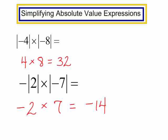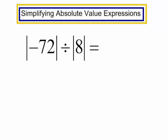Let's try one more problem. The absolute value of negative 72 divided by the absolute value of 8. The absolute value of negative 72 is 72, divided by the absolute value of 8, which is just 8. And 72 divided by 8 is 9.